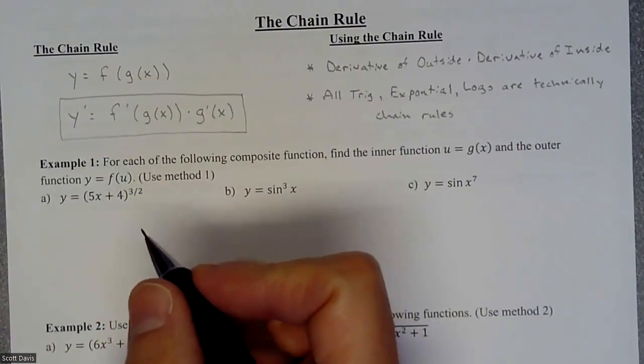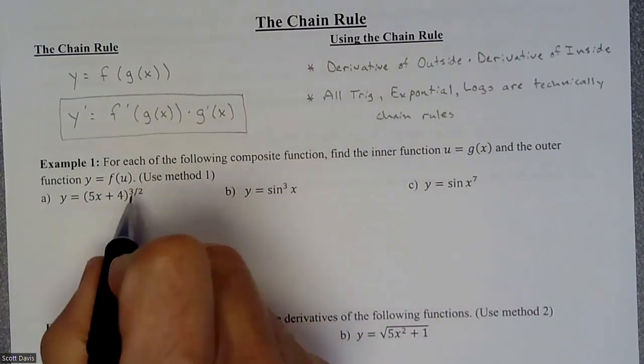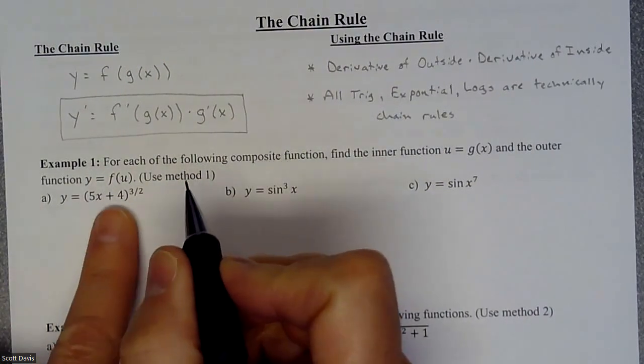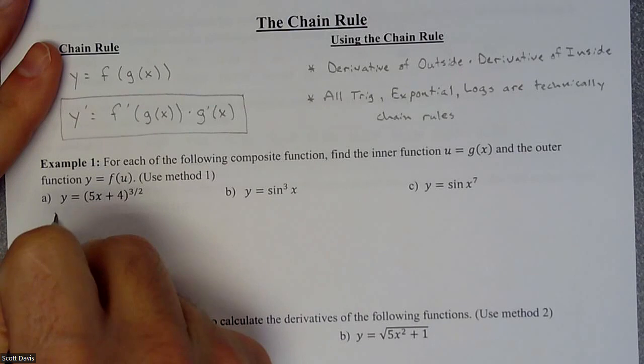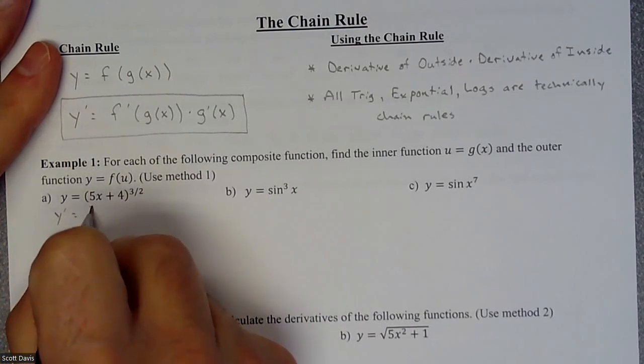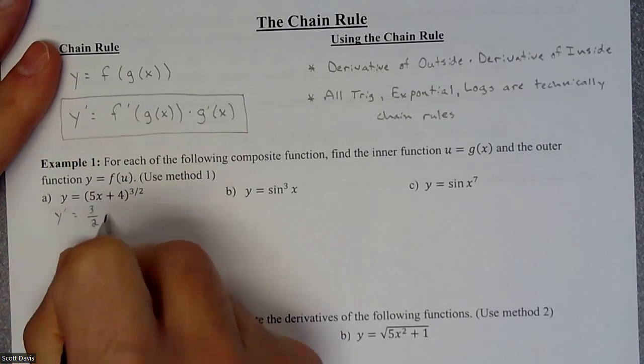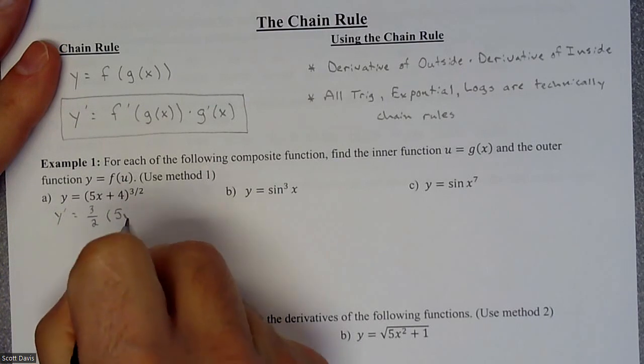So first thing is we're going to be taking the derivative of the outside. So if we kind of ignore that, that's the derivative of the outside. So we're going to take that power, bring it down. So y prime is going to be three halves. It won't change anything on the inside.